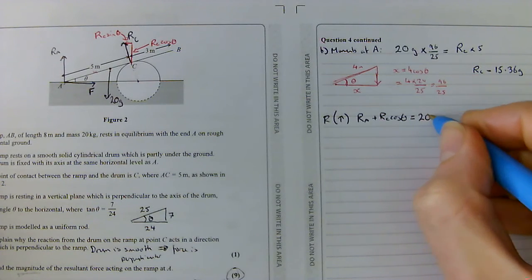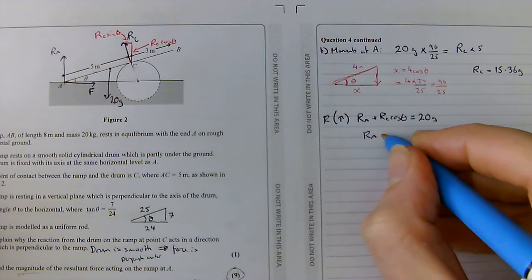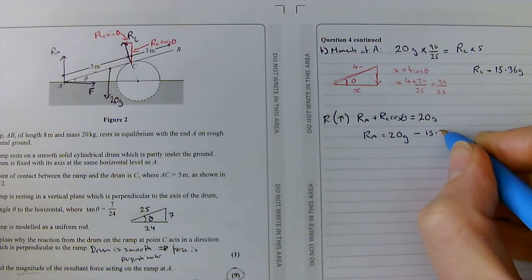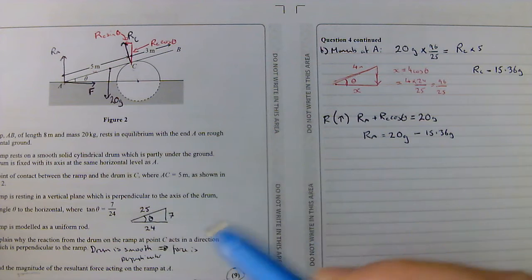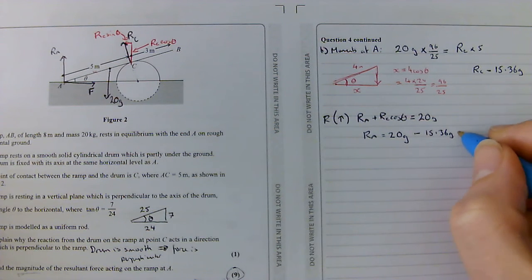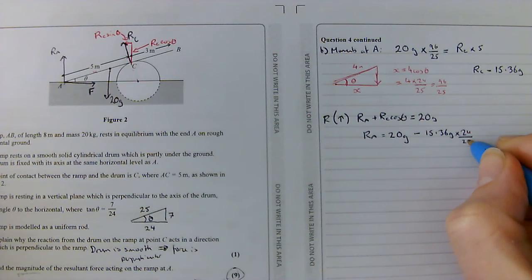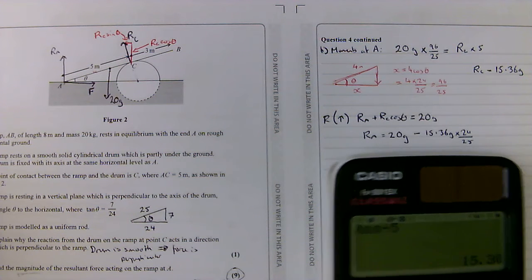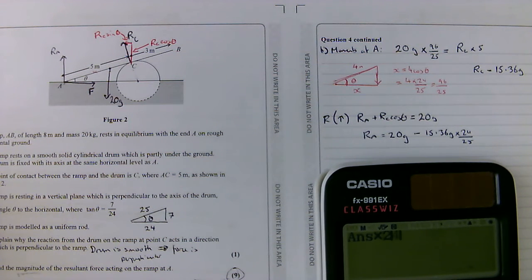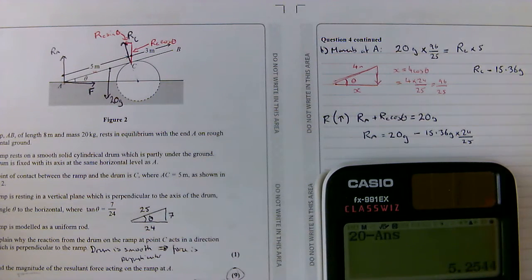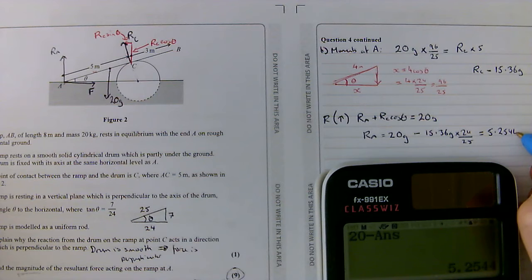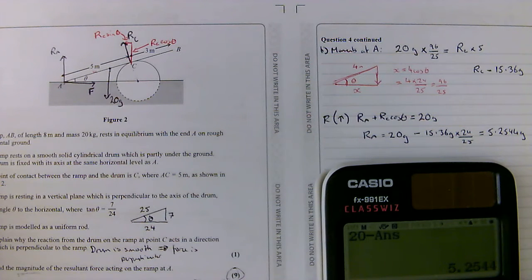So I can say that R_A equals 20G minus R_C, which is 15.36G, minus 15.36G times by cos theta, cos theta is 24 over 25. So I'm just going to do, on my calculator, 15.36G times 24 over 25. And 20 minus that gives me 5.2544G. So that's my reaction force at A.